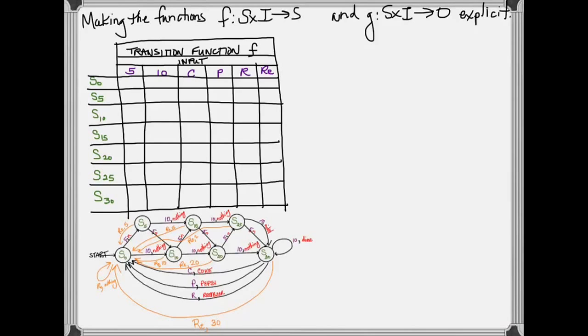In this case, if you start in state 0 and you insert a nickel, then that state should transition to state S5. But if you insert a dime, it should transition to state S10. So in your table, adding a nickel moves you from S0 to S5, and adding a dime moves you from S0 to S10.